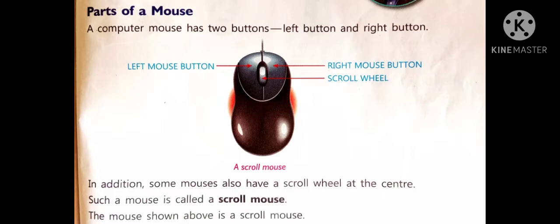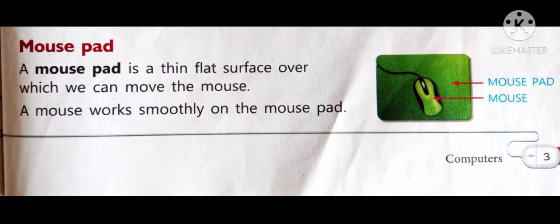The mouse shown above is a scroll mouse. Mouse pad. A mouse pad is a thin flat surface over which we can move the mouse. A mouse works smoothly on the mouse pad.